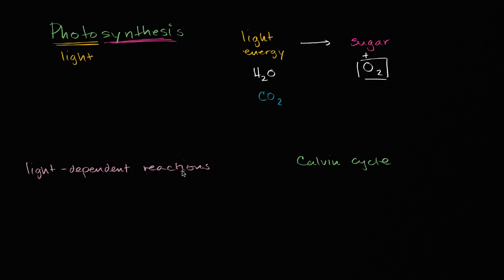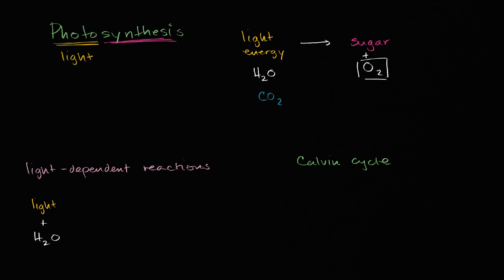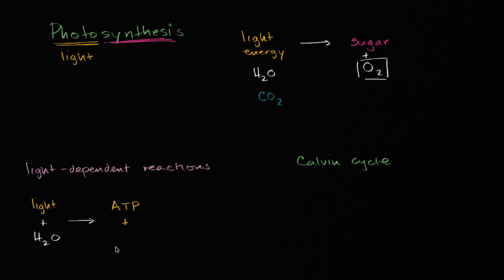As the name implies, the light-dependent reactions are dependent on light. What's happening here is we're going to take light energy plus water as a source of electrons, and use these two things to produce ATP from ADP — which is a store of energy. We're also going to reduce NADP+ into NADPH, which has energy as a strong reducing agent. That's broadly what is happening in the light reactions.